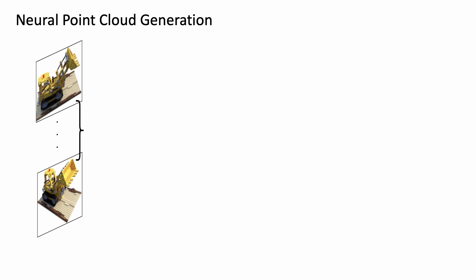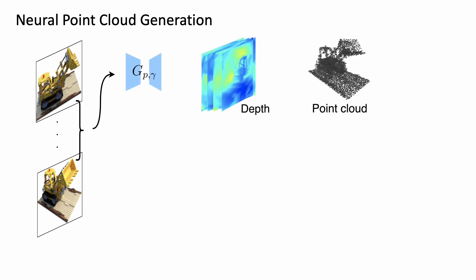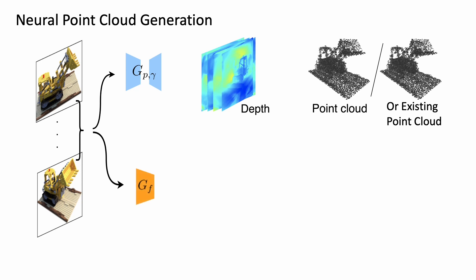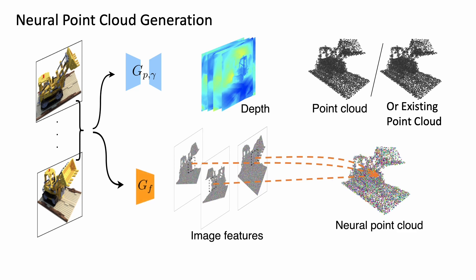To get the shape prior from the 2D image input, a multi-view reconstruction network generates depth images and combines them into a point cloud. We can also use an existing point cloud here. Then, another feature extraction network projects the image features onto the points and finally creates a neural point cloud.